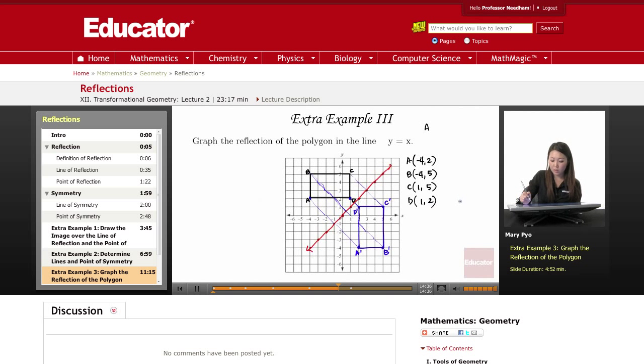Okay, now for the reflected image, A prime became two, negative four. B prime became five, negative four. And C prime is five, one. D prime is two, one.